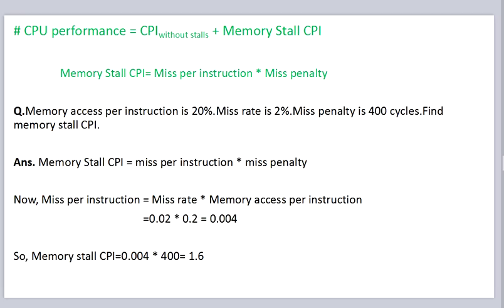We have a question: memory access per instruction is 20%, miss rate is 2%, and miss penalty is 400 cycles. Find memory stall cycles. Memory stall CPI equals miss per instruction into miss penalty. Miss per instruction equals miss rate times memory access per instruction, that is 0.02 times 0.2, giving 0.004. So memory stall CPI equals 0.004 times 400, which is 1.6.